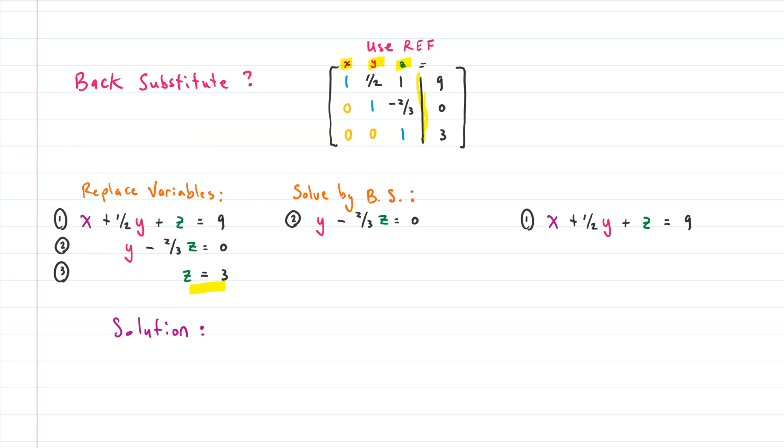And that's the whole beauty of row echelon form, REF, is that it solves for the last variable. And then what we do is we back substitute by taking that last variable and plugging it back into equation two, because then we can solve for Y because that'll be the only variable that's left once we plug in three for Z. And then once we know Y, we can plug Y and Z into equation number one and solve for X.